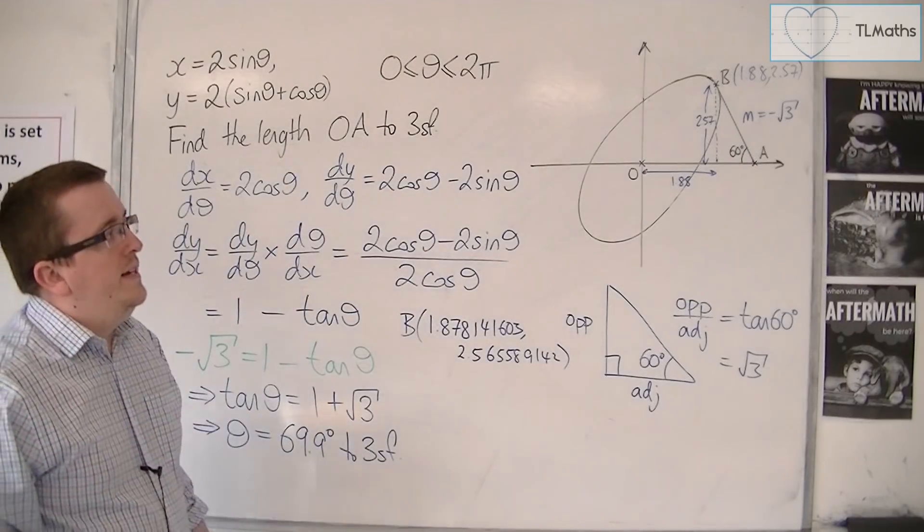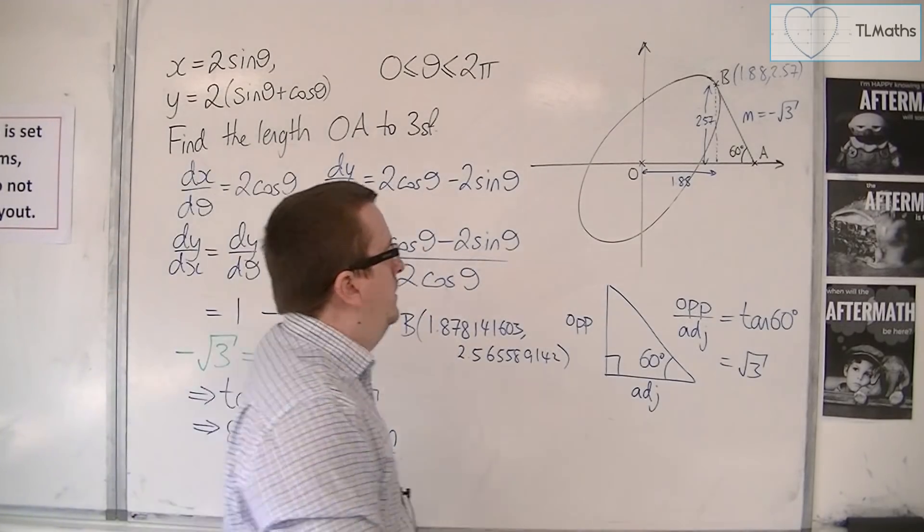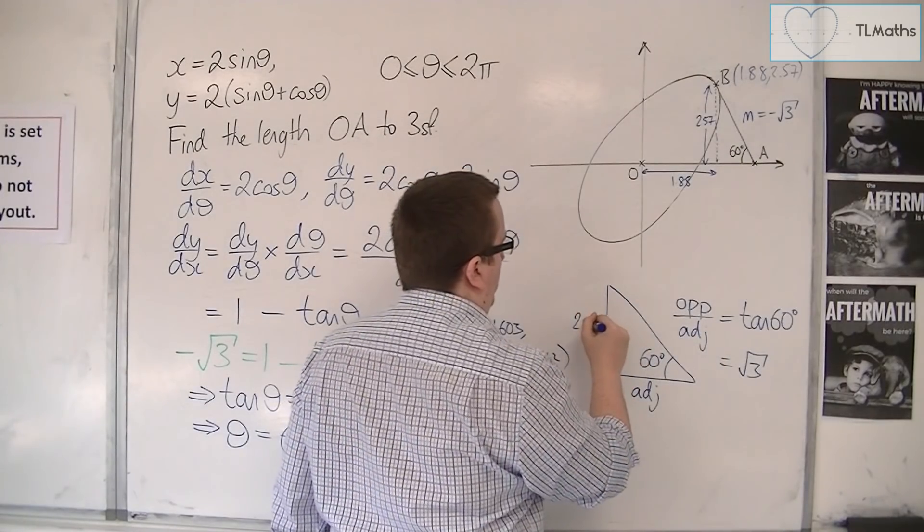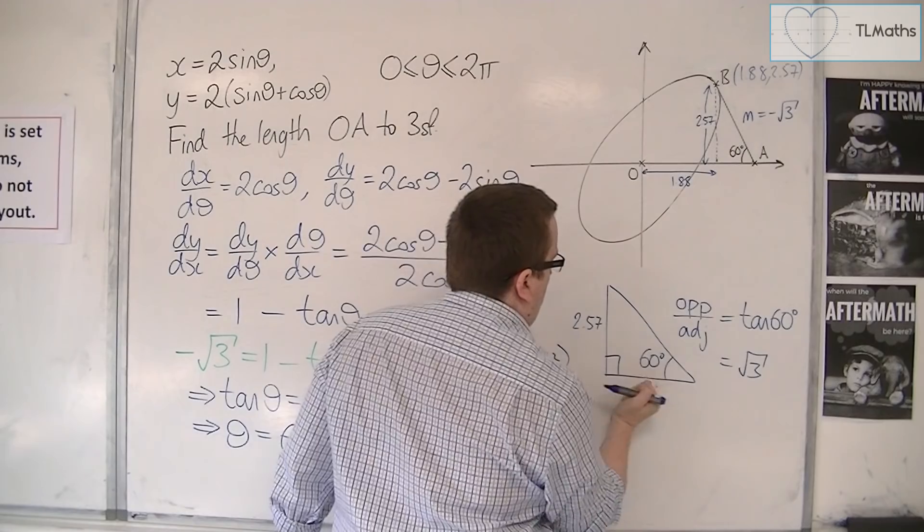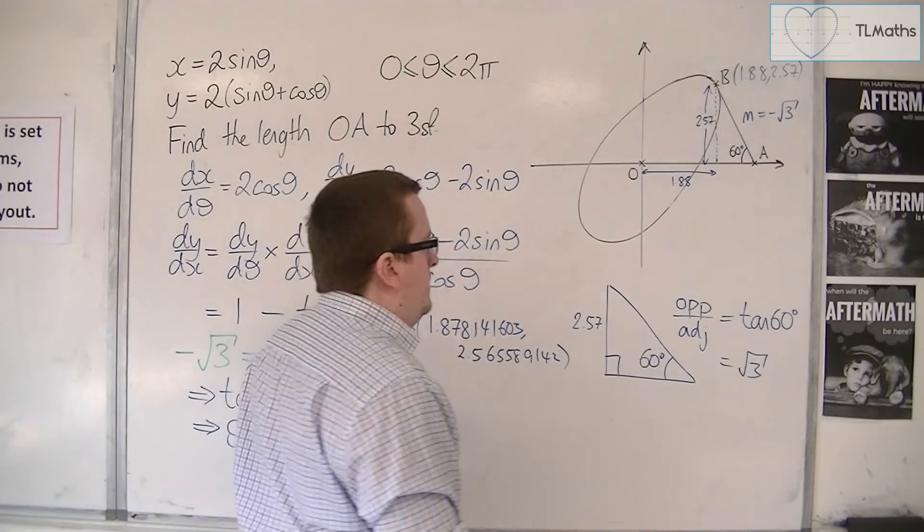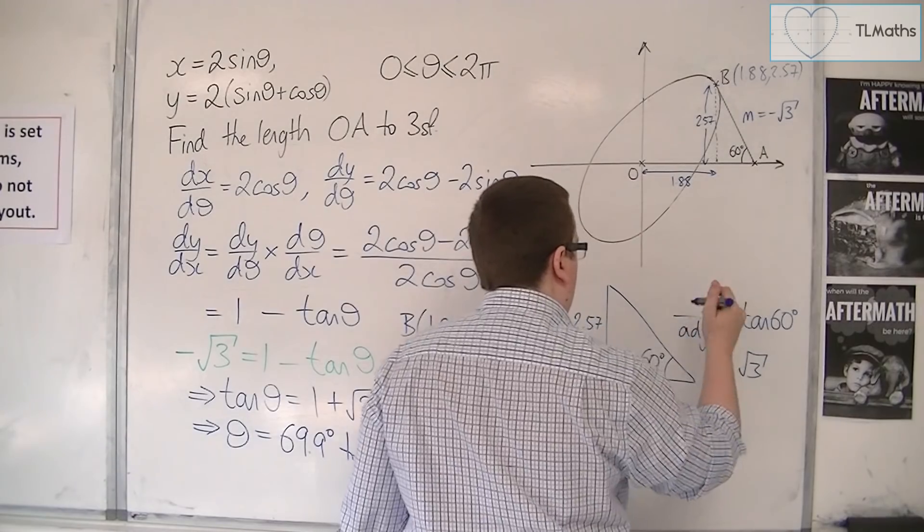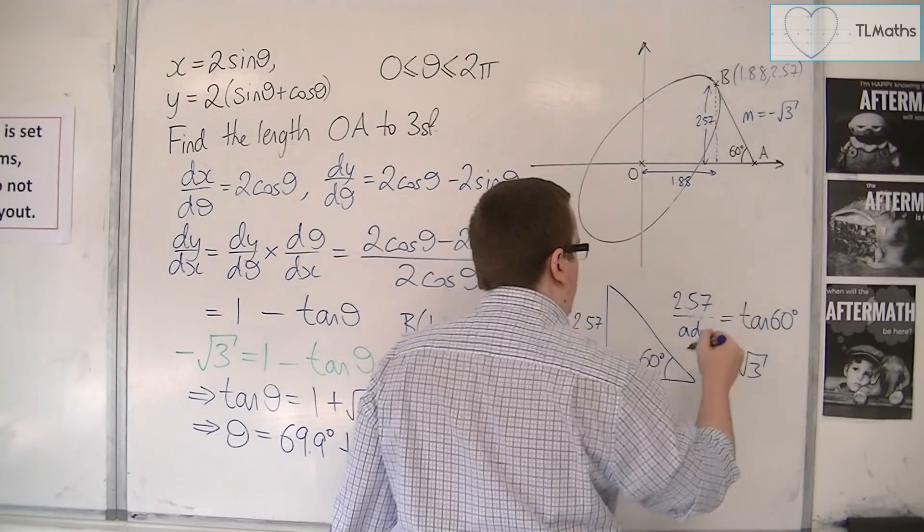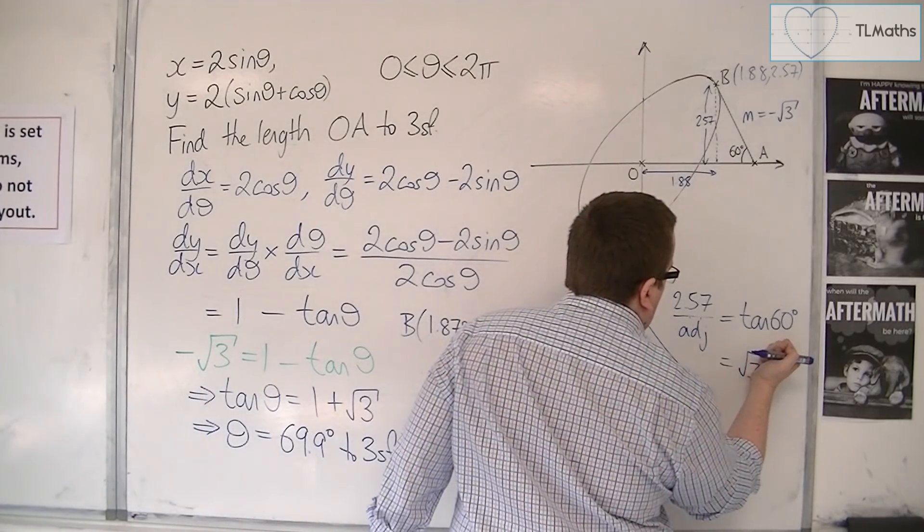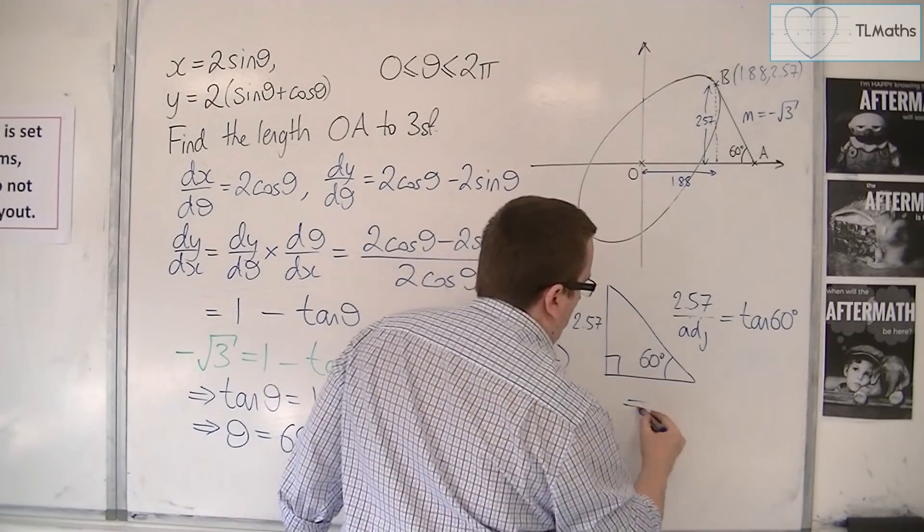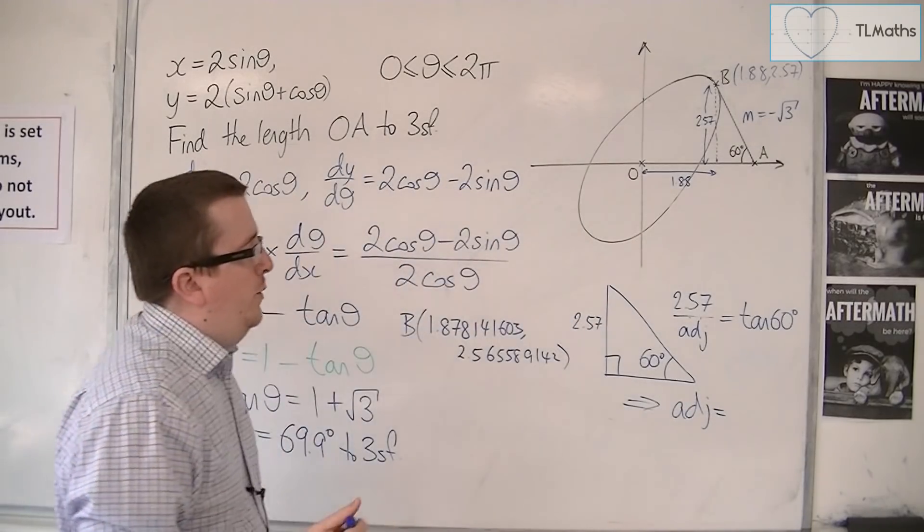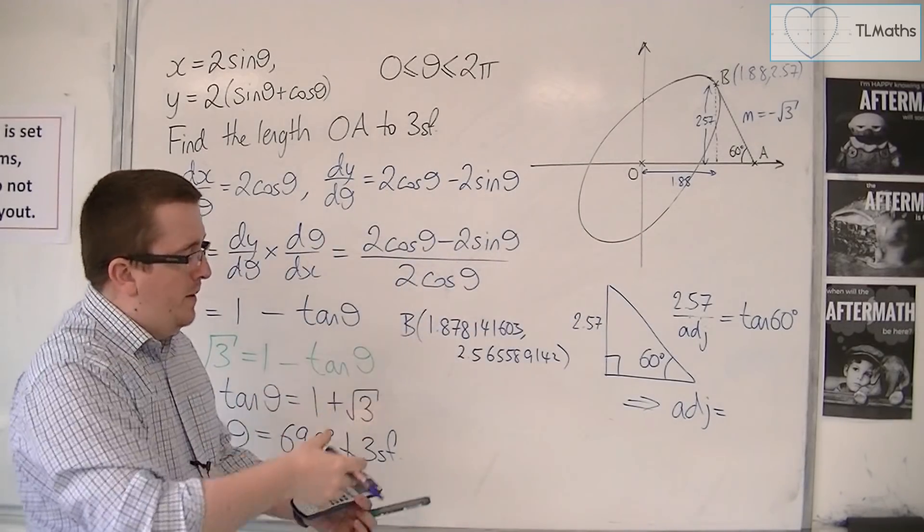If I know the height of that right angle triangle is 2.57, then I should be able to work out the adjacent. I can rearrange this to get the adjacent equals 2.57 divided by tan 60.